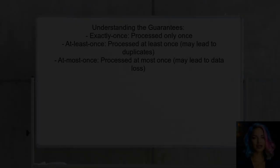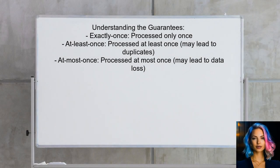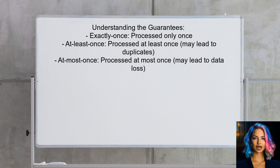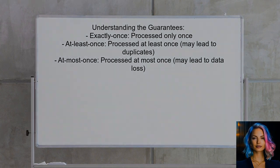So what do these guarantees really mean? Exactly once means that a message is processed only once. At least once ensures that a message is processed at least once, which can lead to duplicates. At most once means a message is processed at most once, which can result in data loss.